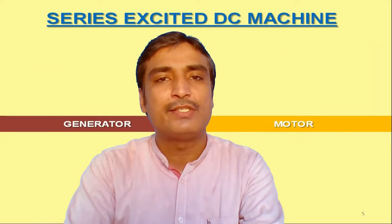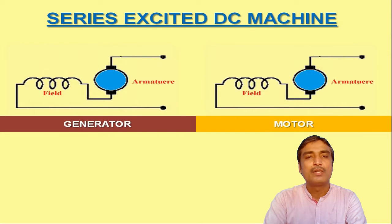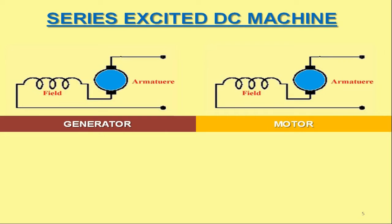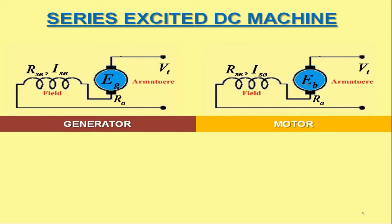The next one is series excited DC machine. These are the representations of series excited DC generator and motor. The series field winding resistance is RSE and the current in the series field winding is IAC. EG and EB are the generated EMF and back EMF in the armatures of the series excited DC generator and motor respectively. VT is the output terminal voltage of the series excited DC generator, while in case of series excited DC motor VT is the input terminal voltage. The armature resistance is RA and armature current is IA. IL is the output or input current as the case may be, with the red arrows indicating the direction of current IL.